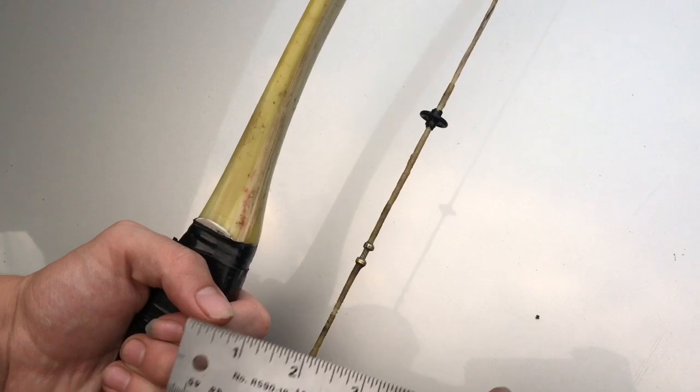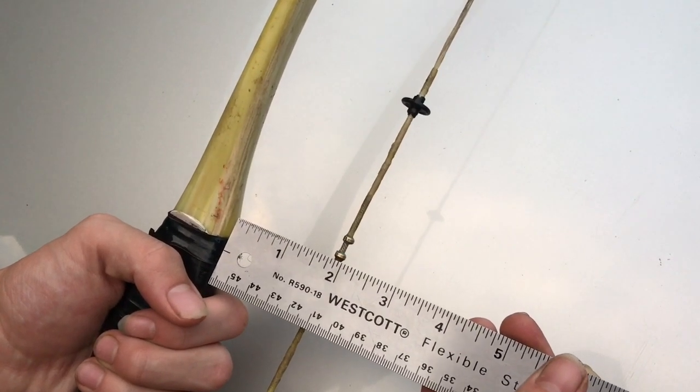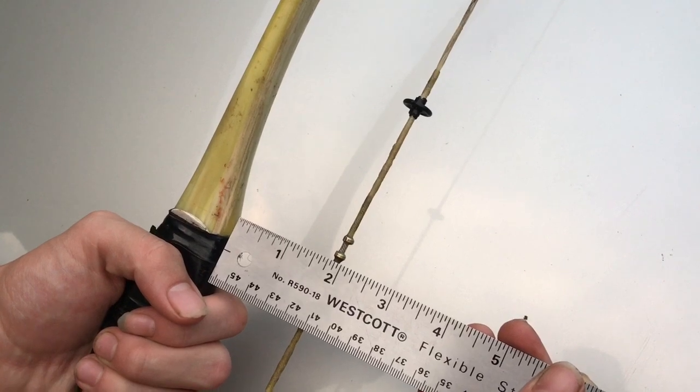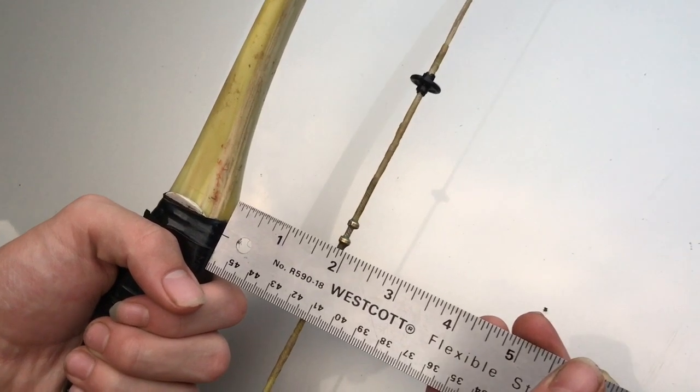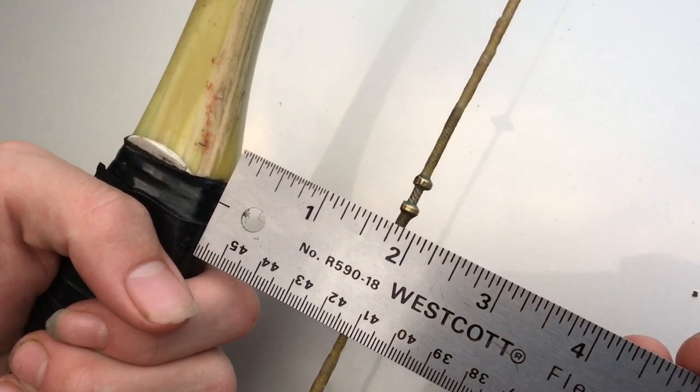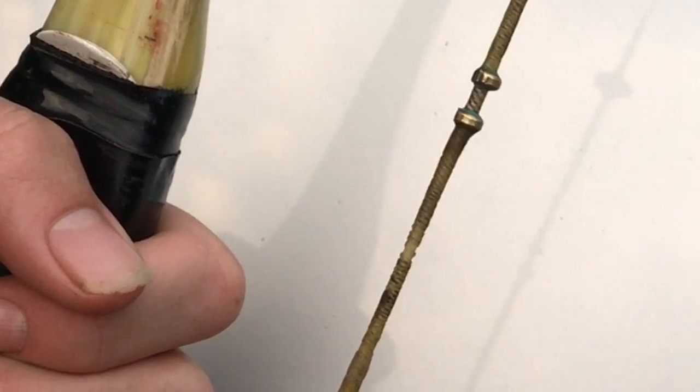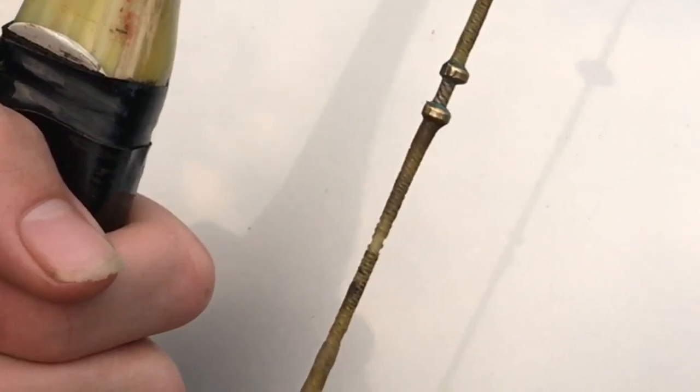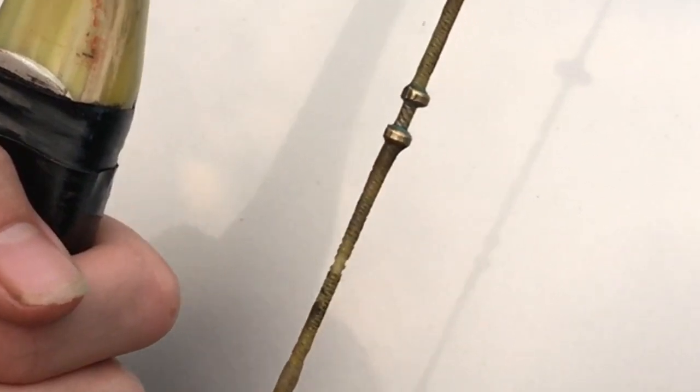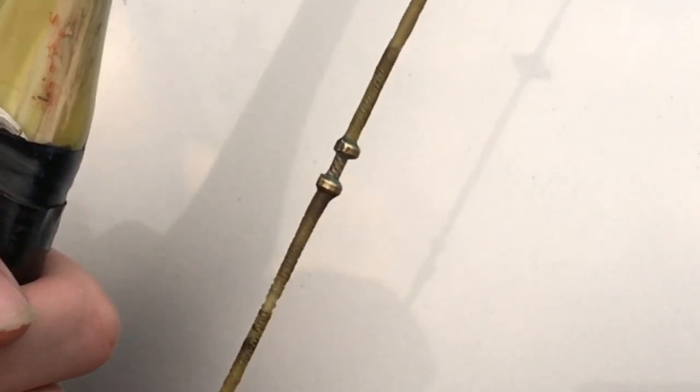To show you how this works, we're going to take a measurement. Roughly, the string is about two inches away from the bow. You also notice that the two brass beads that hold the nock on the string are also a little bit high. This technique will also allow us to adjust this perfectly up and down as well.